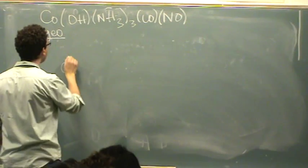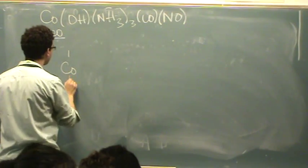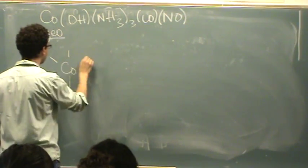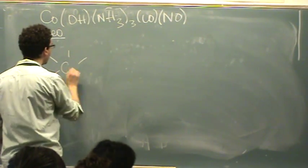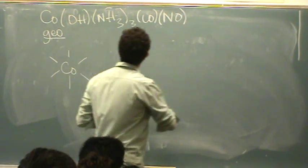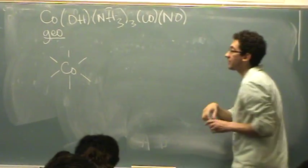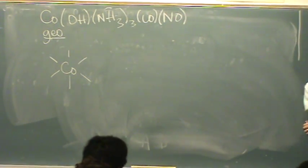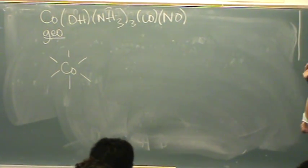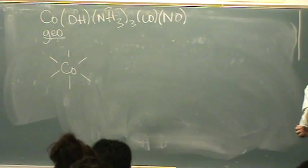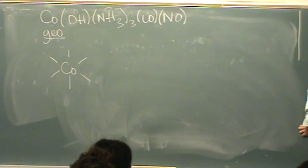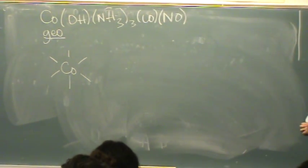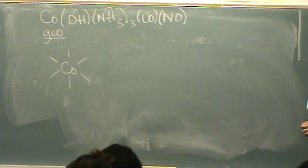So we've got CO. When I look at the molecule, I've got three individual ligands: the hydroxide, the carbon monoxide, and the nitrogen monoxide. And I've got three that are equivalent — the three amines.